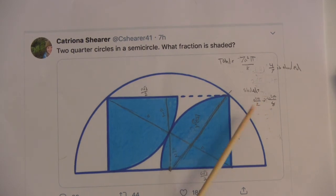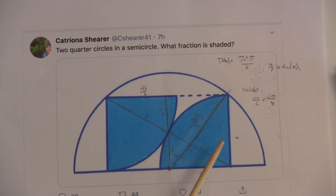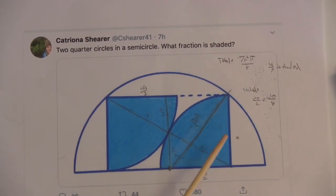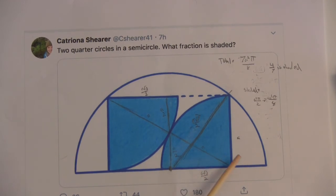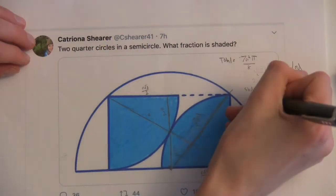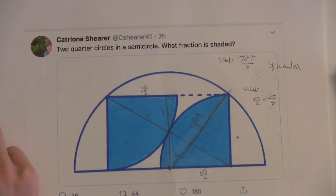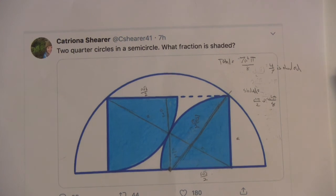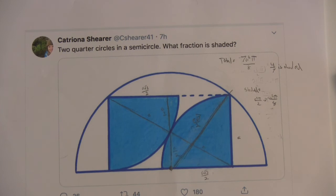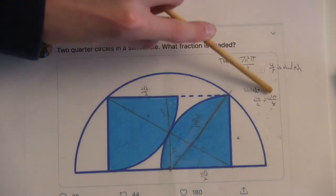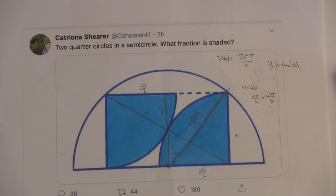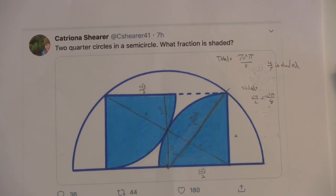And then these two shaded quarter circles, we can sort of combine them into one semicircle with radius A, and so its area is A squared pi over 2, which we can write as 4A squared pi over 8. Okay. And so we can see 4 out of the 7 A squared pi over 8 is shaded, so 4/7 is shaded. Really good.